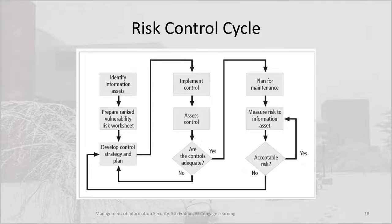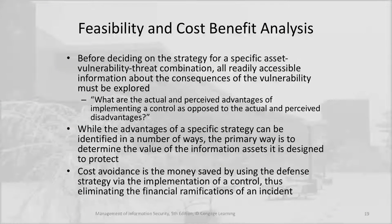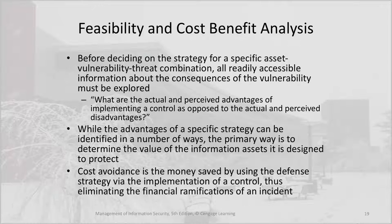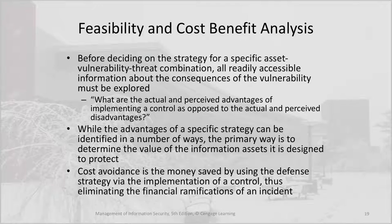Before deciding on the strategy for a specific asset-vulnerability-threat combination, all readily accessible information about the consequences of the vulnerability must be explored. What are the actual and perceived advantages of implementing a control as opposed to the actual and perceived disadvantages? The primary way to identify advantages is to determine the value of the information asset the control is designed to protect. Cost avoidance is the money saved by using the defense strategy via the implementation of a control, thus eliminating the financial ramifications of an incident.